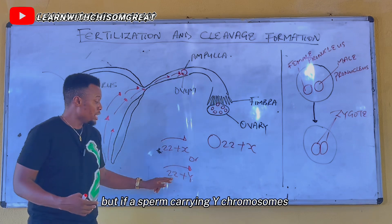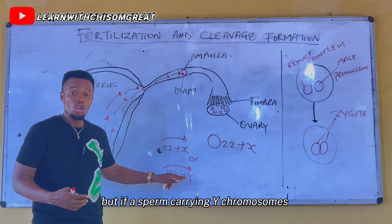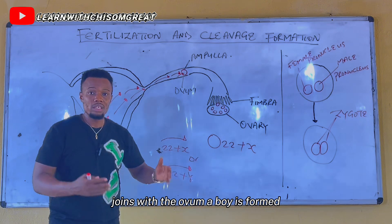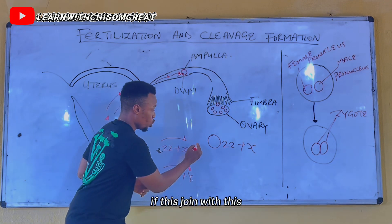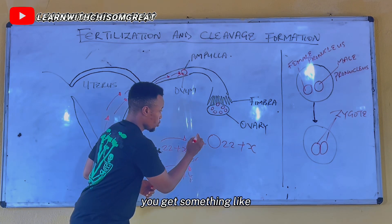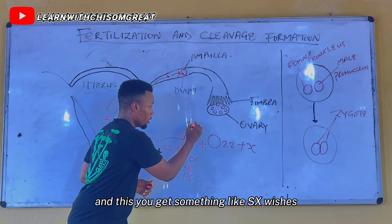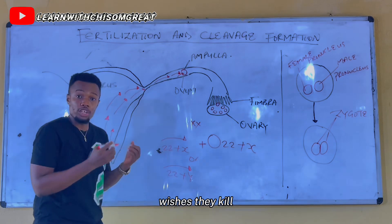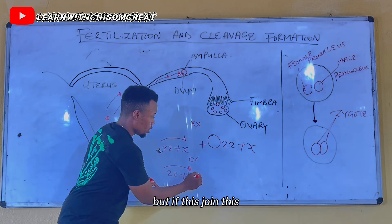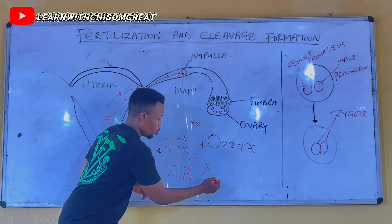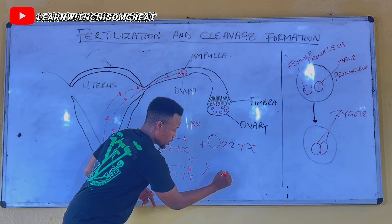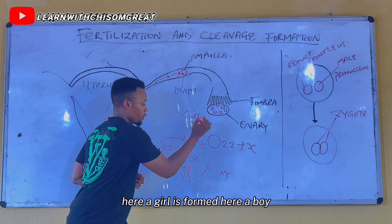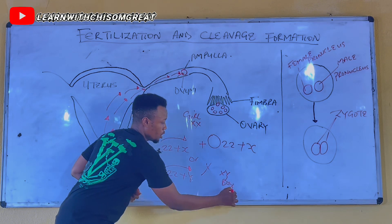But if a sperm carrying the Y chromosome joins with the ovum, a boy is formed. So the sex of a child is determined by the male, because it is the type of chromosome the sperm carries that determines whether a girl (XX) or a boy (XY) is formed.